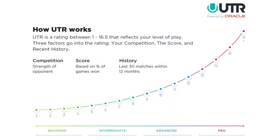In terms of the scale itself — how we measure UTR and what that looks like — UTR is a rating between 1 and 16.5 that reflects your level of play: 1 being the minimum and 16.5 being the maximum. When calculating your UTR, their formula takes three main factors into account. The first is your competition — the strength of your opponent and what their UTR is.